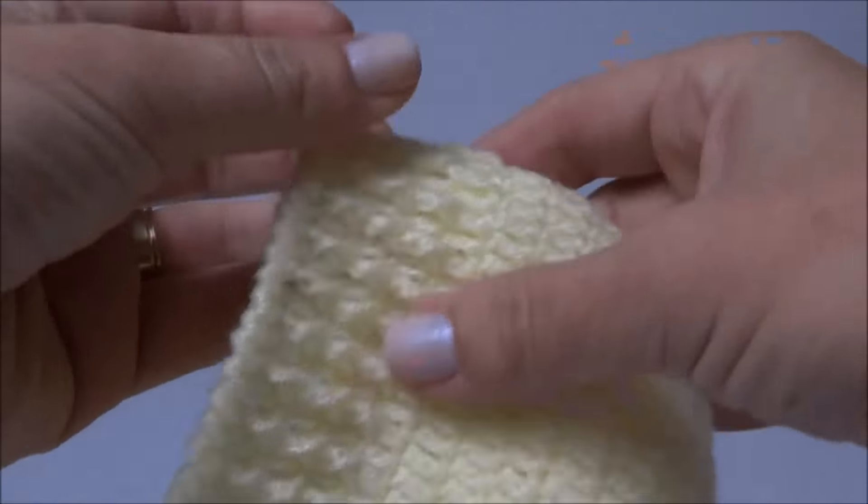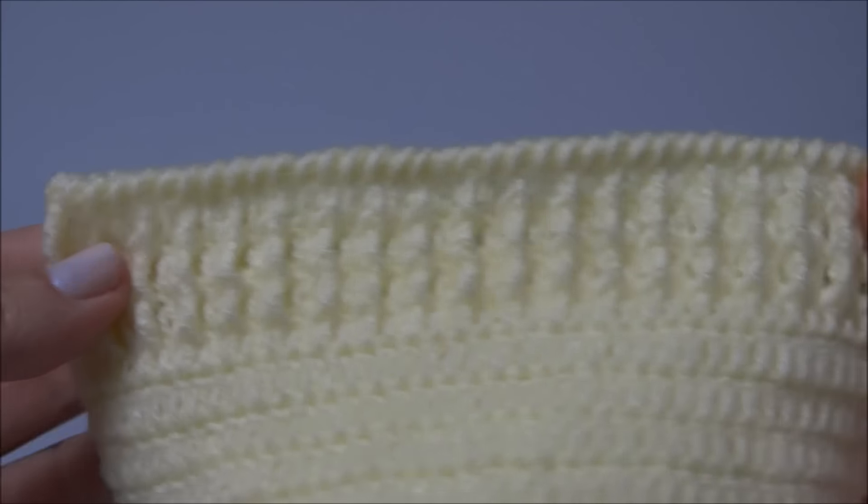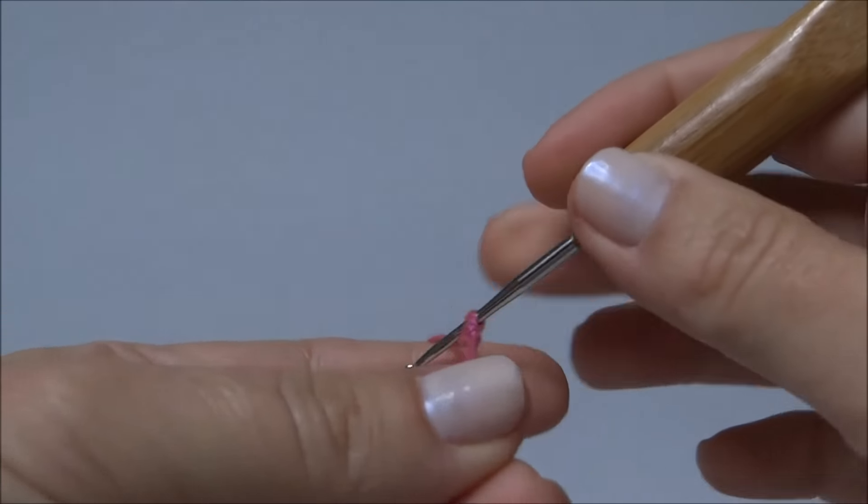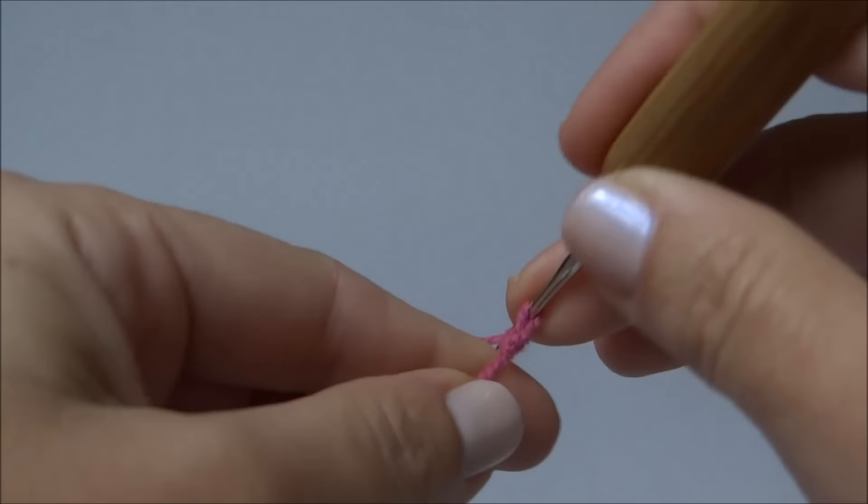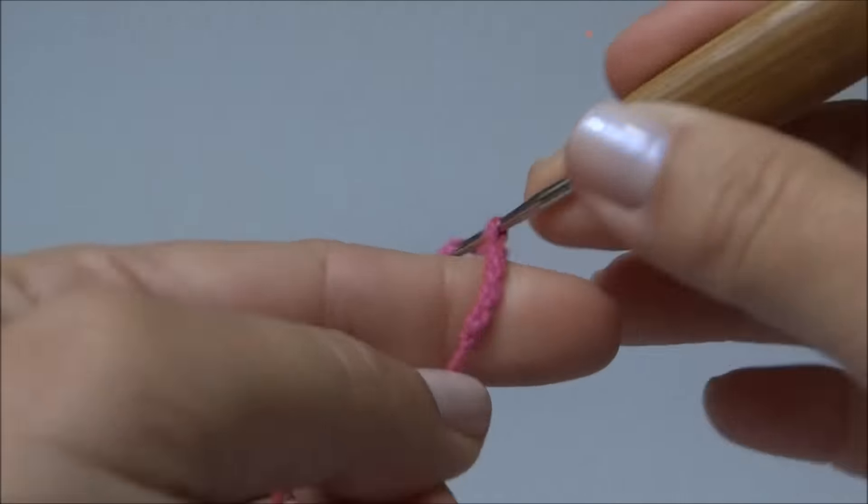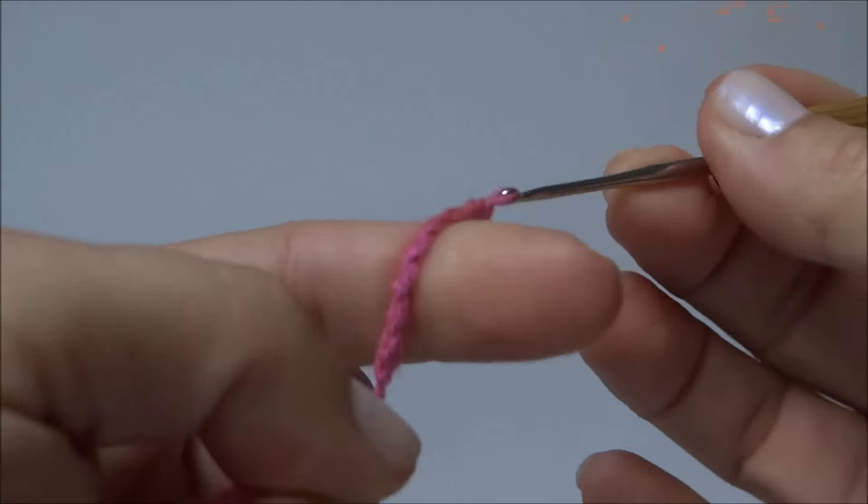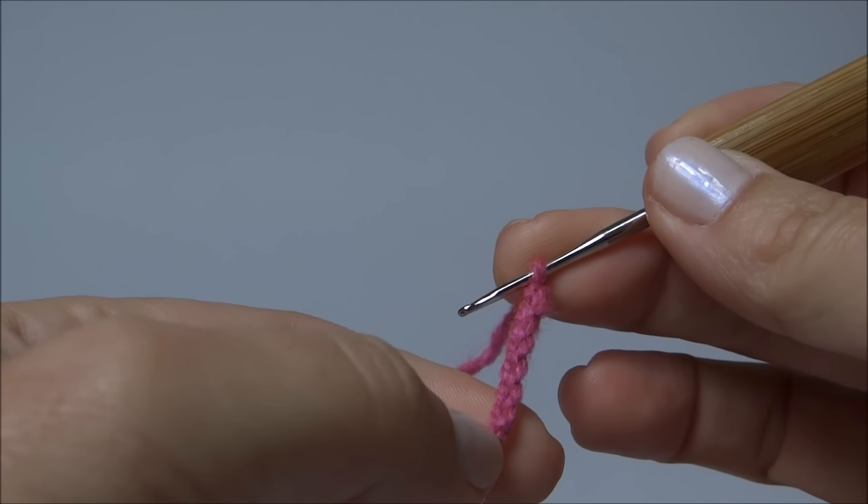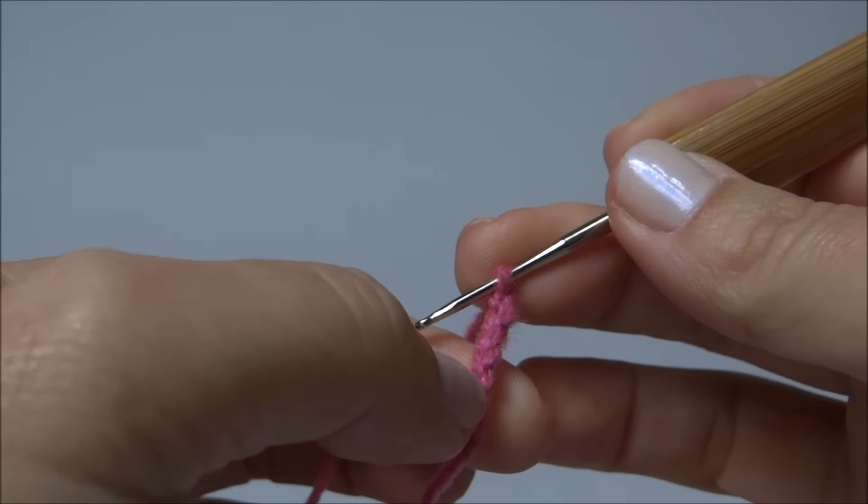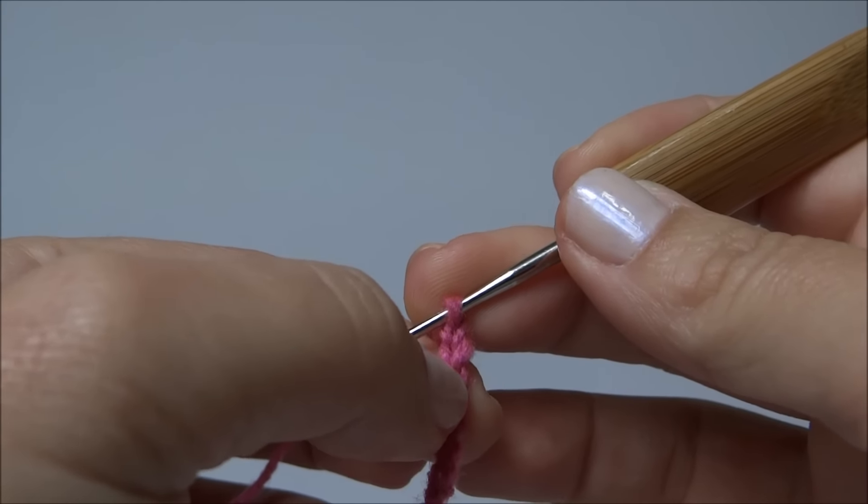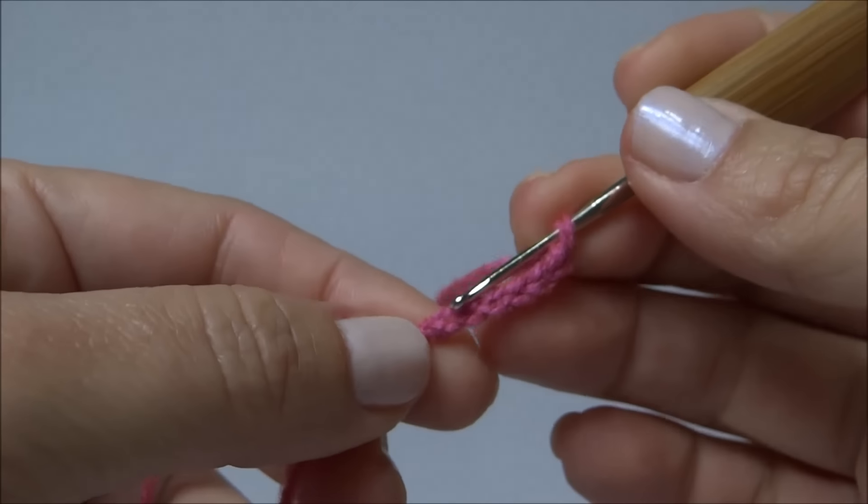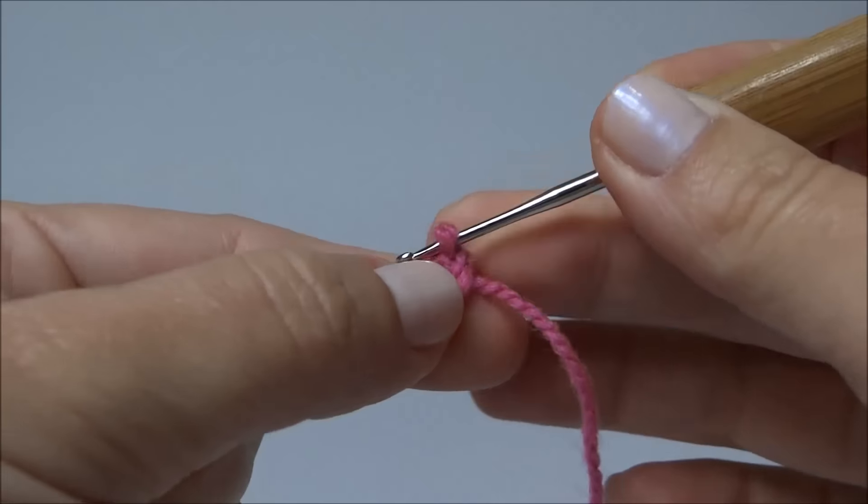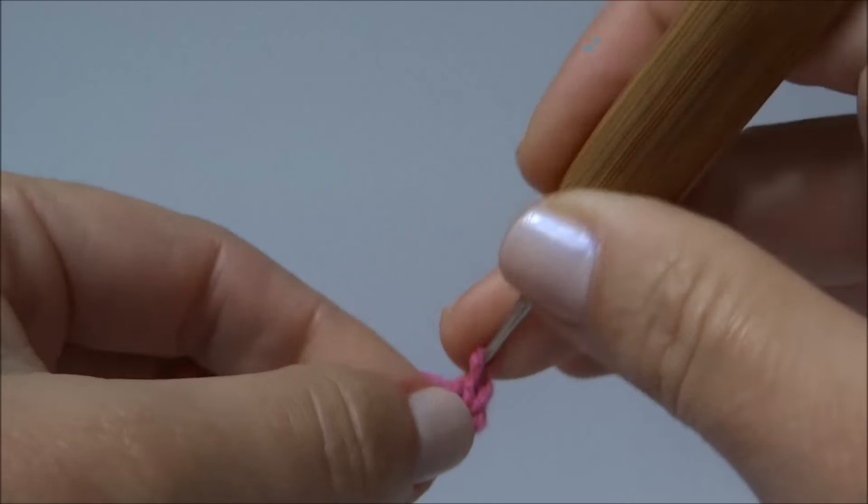Finalizei o acabamento da base com a carreirinha em ponto caranguejo. Agora vou trabalhar as flores que vão enfeitar a nossa touquinha, o nosso gorro. Faço seis correntinhas. Estou trabalhando agora com a lã rosa, que foi a cor escolhida para decorar. Você pode escolher conforme o seu gosto ou o pedido da sua cliente, se você estiver vendendo. Quatro, cinco, seis. Fiz as seis, fecho na primeira das seis com um ponto baixíssimo. Depois que eu fechei, formei a argolinha inicial.